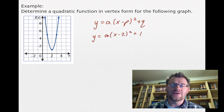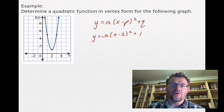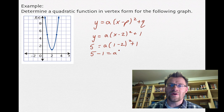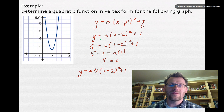We always need to find the value for a. To do that, we use the concept of satisfying the equation: any other point on the parabola satisfies the equation, meaning if we plug that point in, the left-hand side equals the right-hand side. I'll pick the point (1, 5). So we get 5 equals a times (1 minus 2) squared plus 1. Subtracting 1 from both sides gives 4 equals a times 1, so a equals 4. Our equation is y equals 4 times x minus 2 squared plus 1.